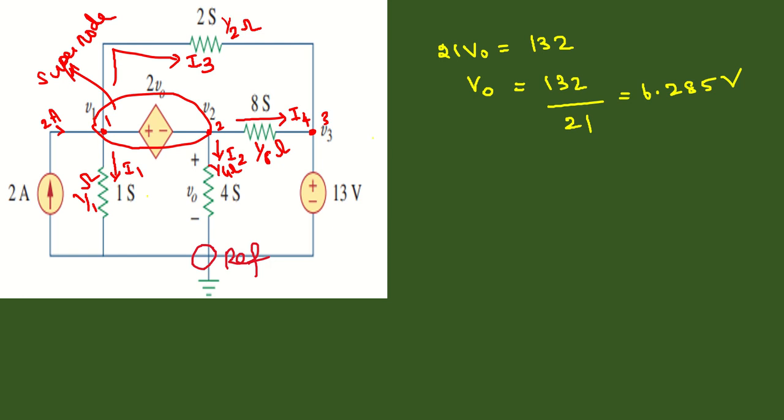We need to find V1 and V3 also. Since V1 equals 3V0, that equals 3 times 6.285, so V1 equals 18.855 volts.